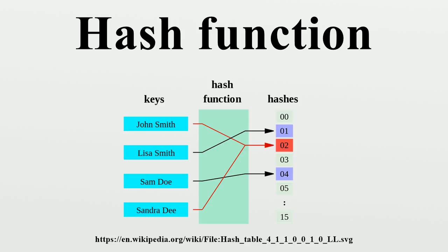Therefore, each slot of a hash table is associated with a set of records, rather than a single record. For this reason, each slot of a hash table is often called a bucket, and hash values are also called bucket indices.